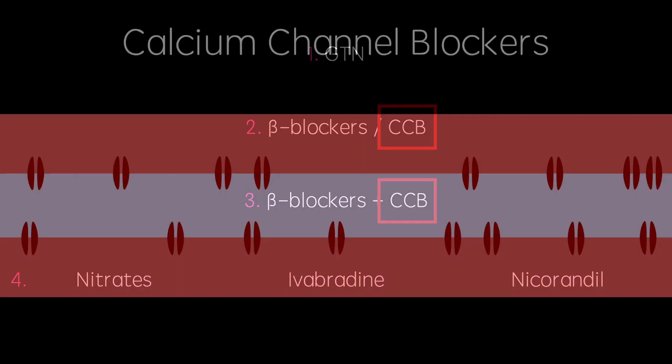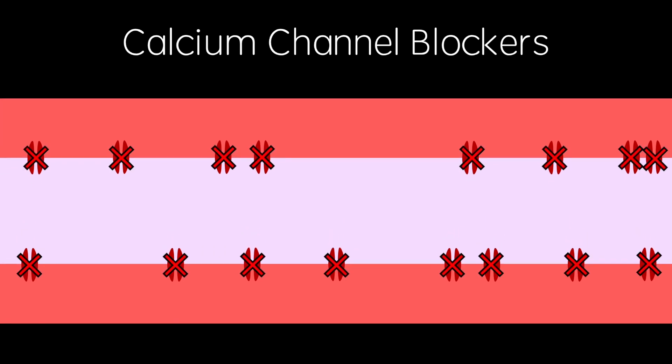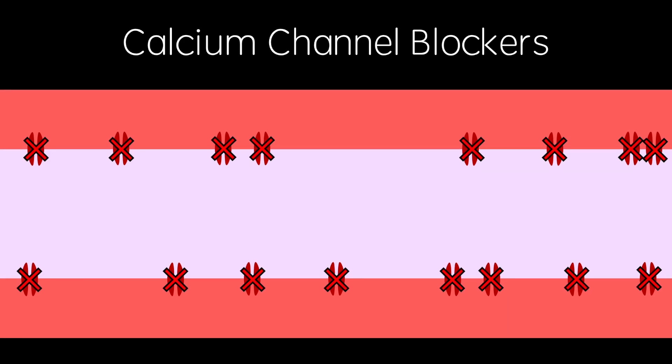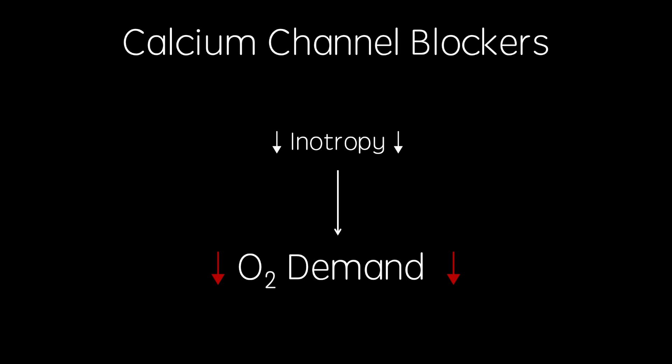Calcium channel blockers mediate their effects by blocking L-type calcium channels in smooth muscle cells of coronary arteries and arterioles, causing vasodilatation. This reduces inotropy and therefore reduces cardiac oxygen demand. These drugs also have antihypertensive properties, which is useful in treating the underlying cause of angina, atherosclerosis.